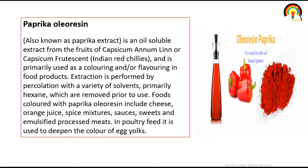Paprika oleoresin is also known as paprika extract. It is an oil-soluble extract from the fruit of Capsicum annuum or Capsicum frutescens, and is primarily used as a coloring and flavoring agent in food products. Extraction is performed by percolation with a variety of solvents, primarily hexane and acetone. Food colors using paprika oleoresin include cheese, orange juice, spice mixtures, sauces, sweets, and emulsified processed meat.